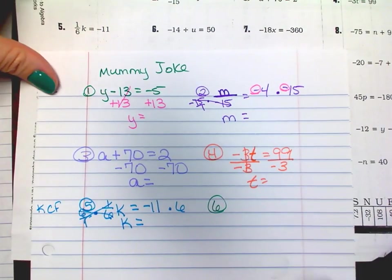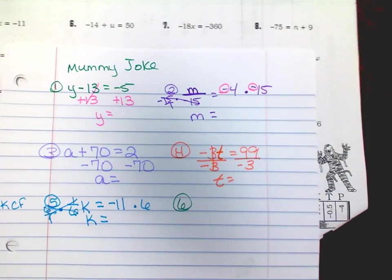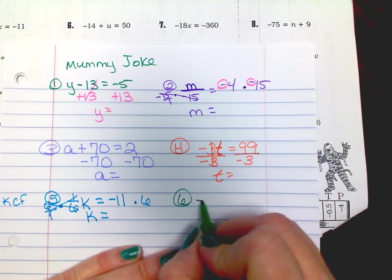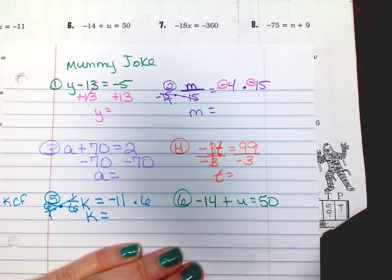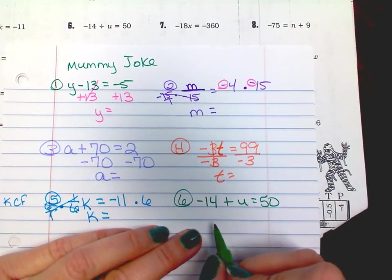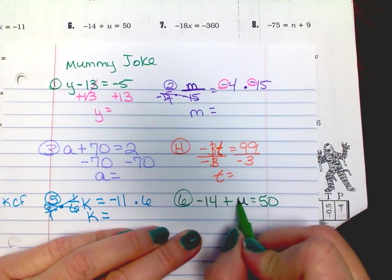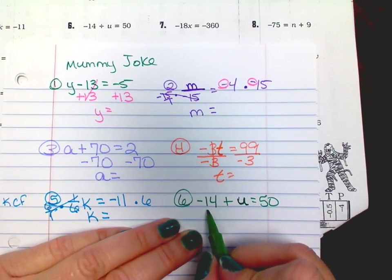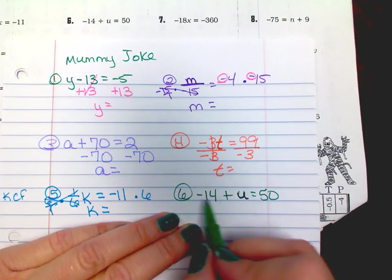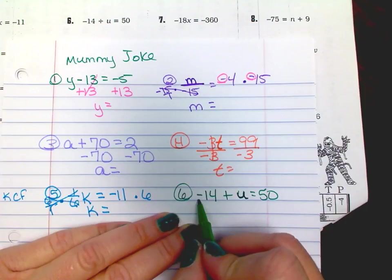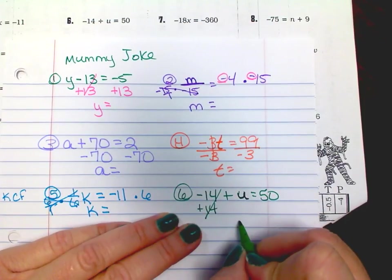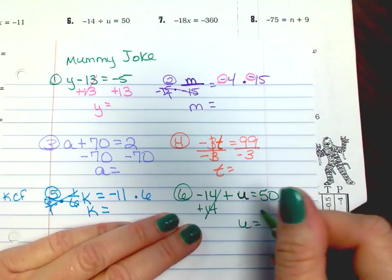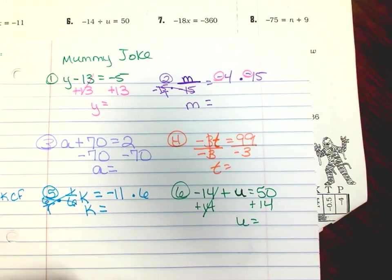Number six. Negative 14 plus u equals 50. I want to get u by itself, so I need to get negative 14 over to the other side. I need to do the opposite because I want it to cancel out — so I have a negative 14, I'm going to make it a positive 14. That cancels out, leaving u. Add 14 to this side and you'll have your answer.